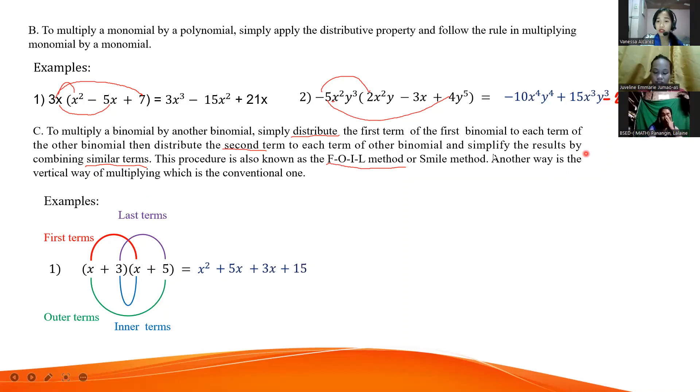Now, it says simplify the result by combining similar terms. Observe, which are the similar terms here? From our discussion on addition and subtraction of polynomials, you should remember. X squared, we bring down. Next, where are the similar terms - 5x and 3x? Very good. 5 plus 3, the answer is 8x. Next is 15, just bring it down. Very good.